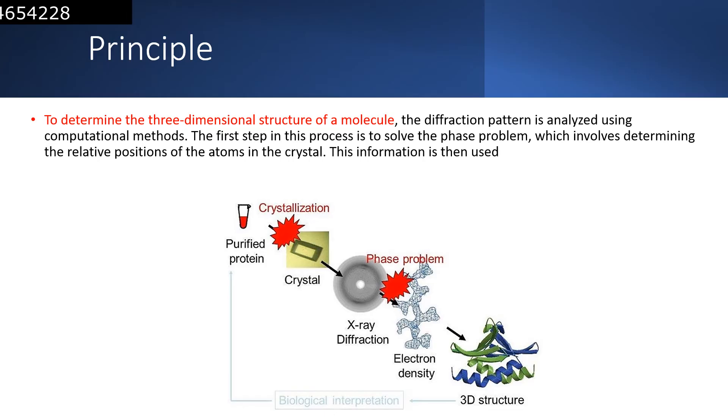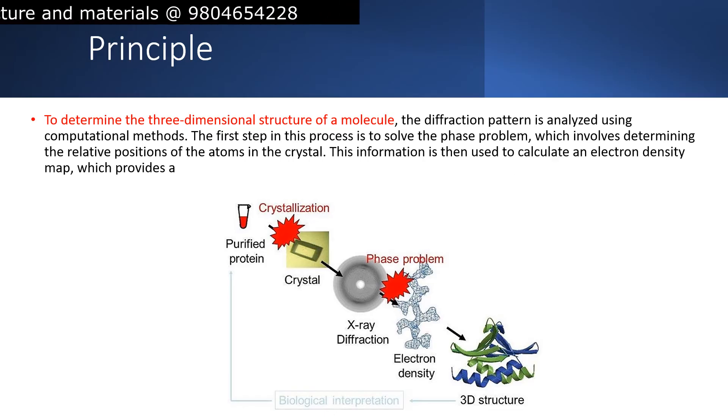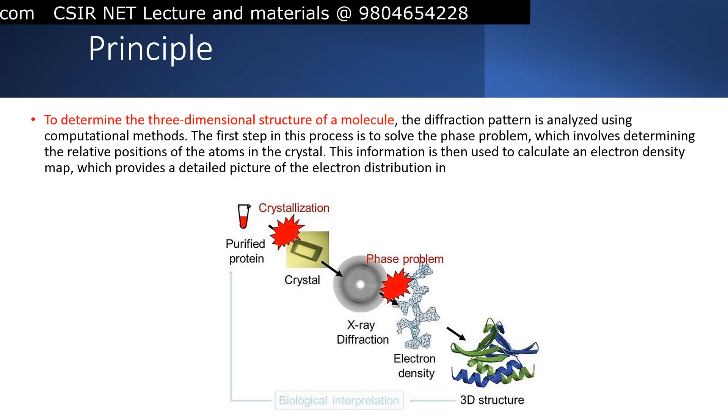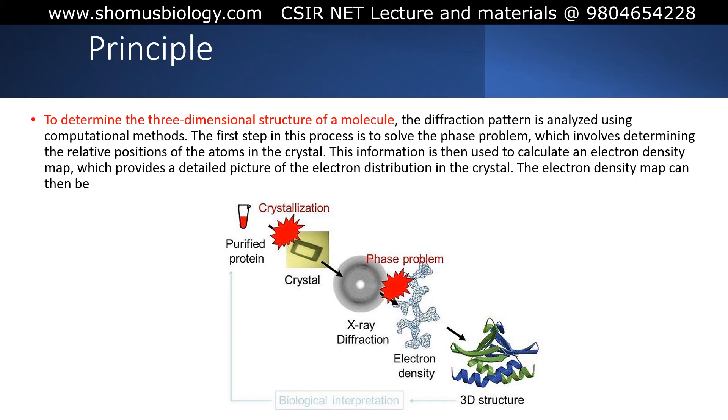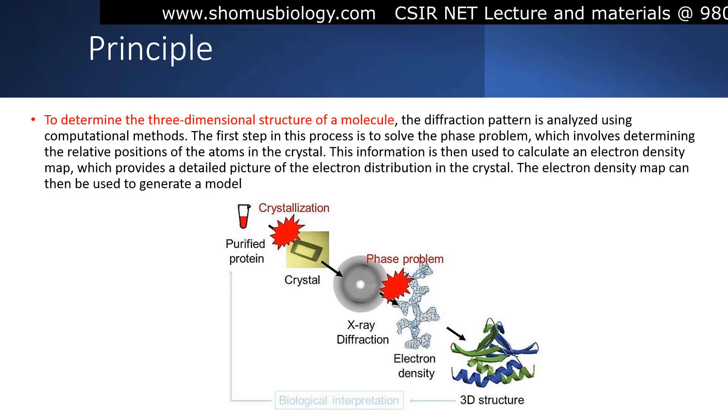This information is then used to calculate an electron density map, which provides a detailed picture of the electron distribution in the crystal. The electron density map can then be used to generate a model of the molecular structure.